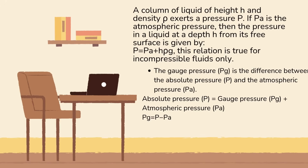The gauge pressure, pg, is the difference between the absolute pressure, p, and the atmospheric pressure, pA. Absolute pressure p is equal to gauge pressure pg plus atmospheric pressure pA. pg is equal to p minus pA.